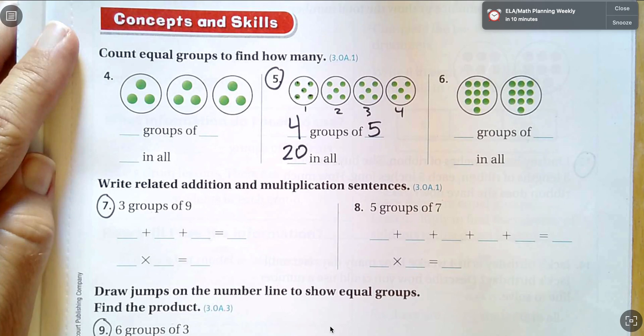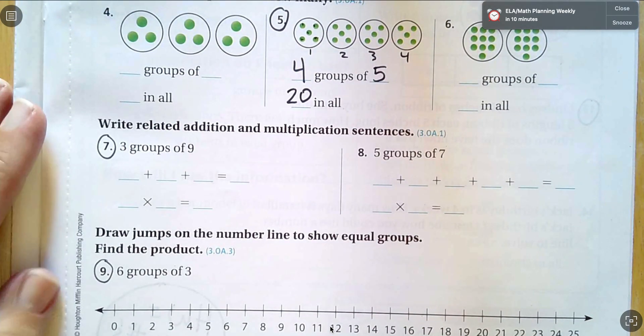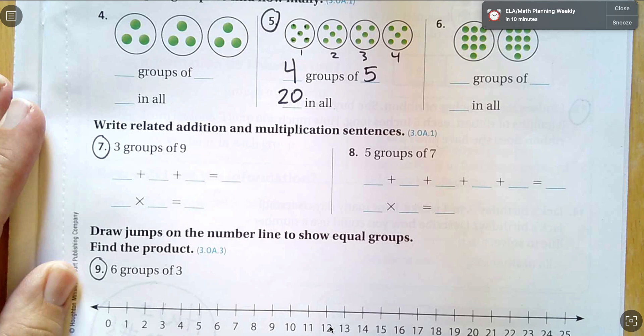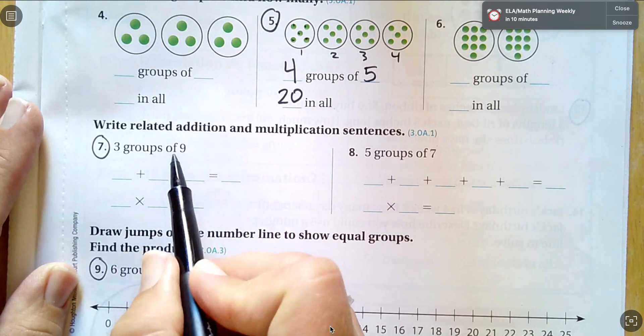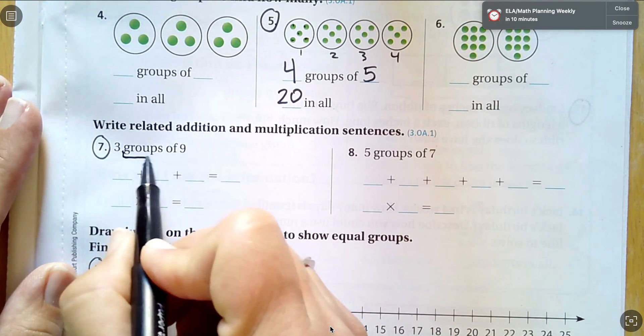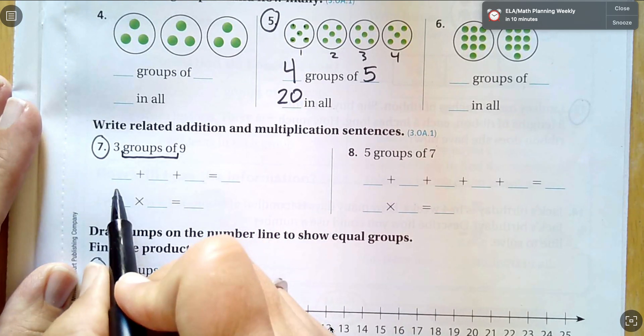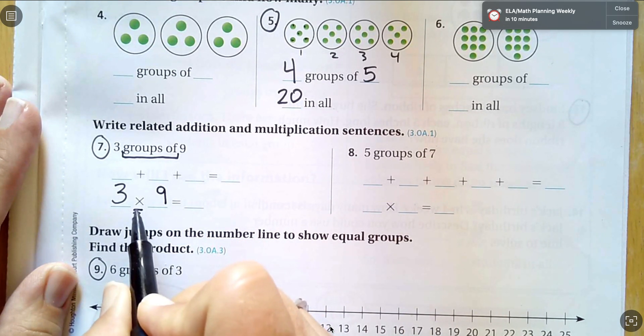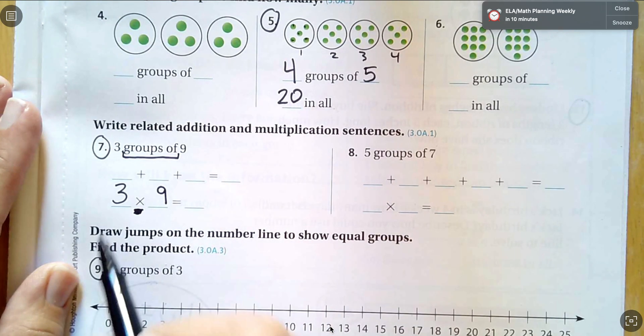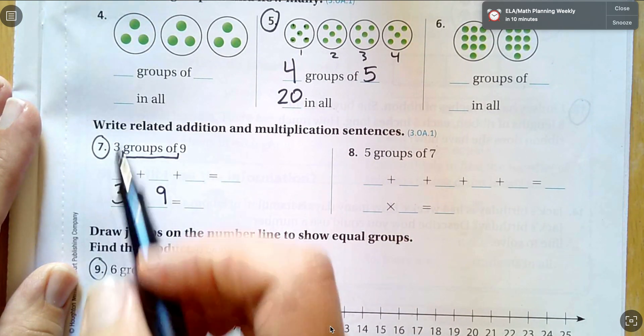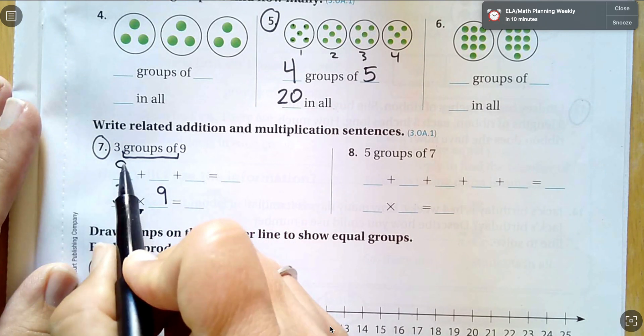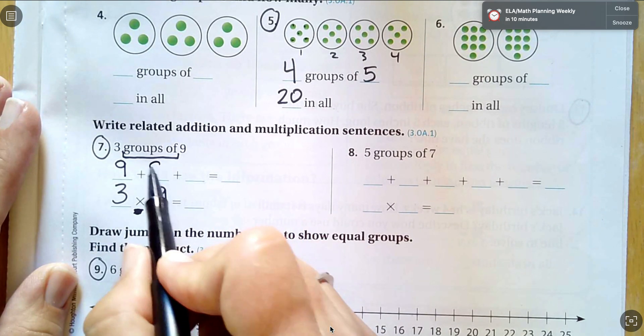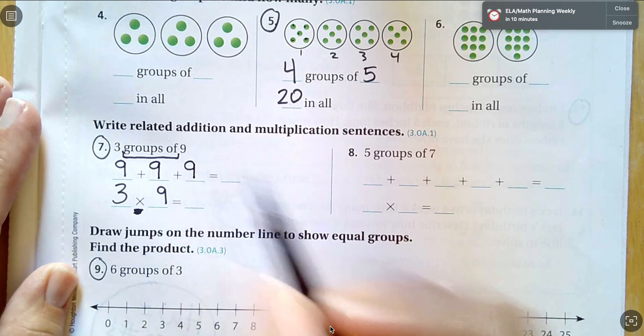Now I'm going to write related addition and multiplication sentences. Three groups of nine. Every time I see this groups of, it's three groups of nine. The multiplication sign means three groups of nine. Or three, adding nine three times. So nine plus nine plus nine.